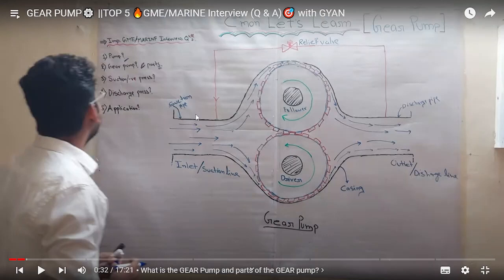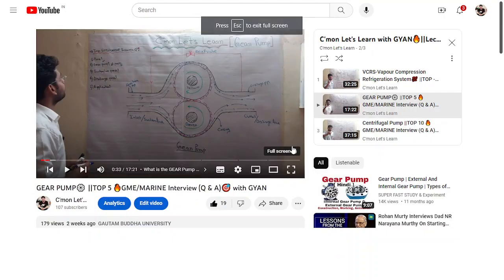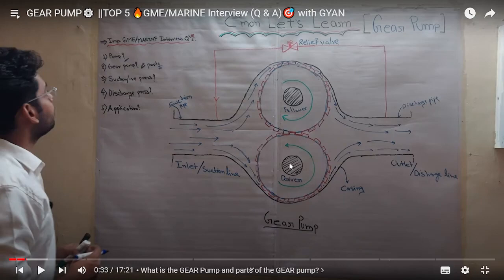Everyone is seeing the gear pump diagram now. A pump is a mechanical device used to transfer fluid from one place to another. A gear pump is a type of positive displacement pump which has two gears — one is the driver gear and the other is the follower gear. The driver gear is connected with the motor shaft, and when it rotates, the follower gear follows and rotates.